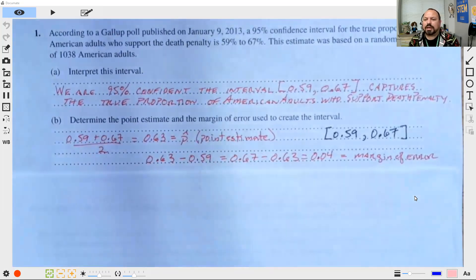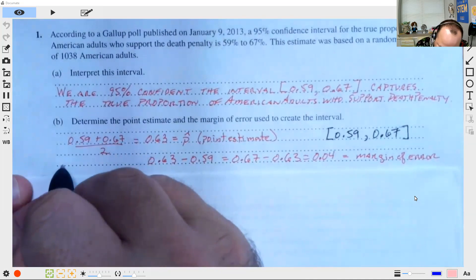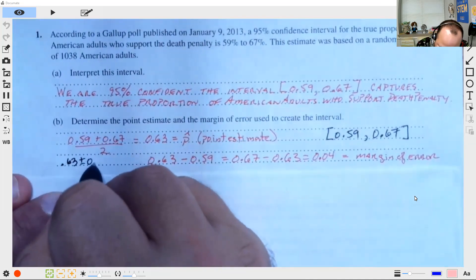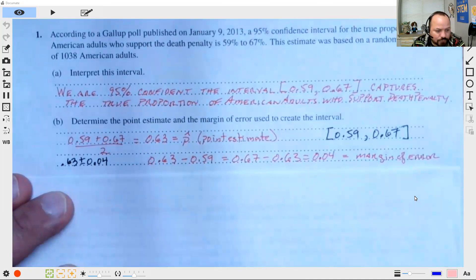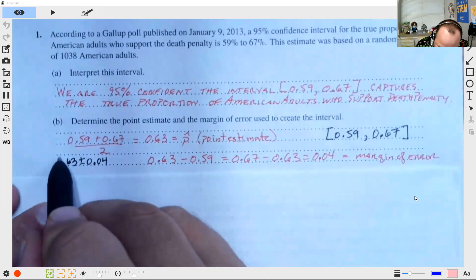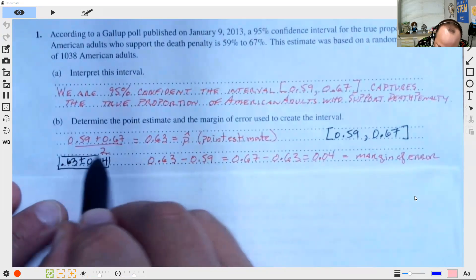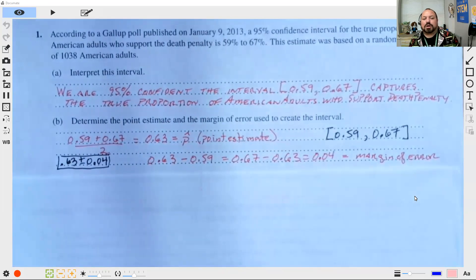So basically saying, here's the center of my interval plus or minus 0.04. I could say I have 0.63 plus or minus 0.04, and that is the interval. My interval is 0.63 plus or minus 0.04. Those of you that are in biology and chemistry may be more familiar with seeing the notation in that form.